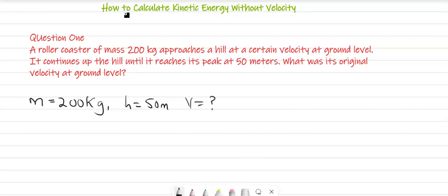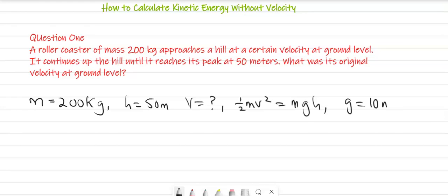To solve this problem, we use the formula: half V squared is equal to G times H. However, as we can see from the question, G is not given to us — and we know G is a constant, which is acceleration due to gravity, and is equal to 10 meters per second squared.